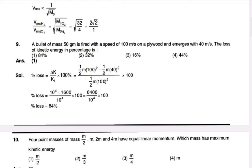Change in kinetic energy means final kinetic energy minus initial kinetic energy. Initial minus final kinetic energy is the loss. Dividing by initial kinetic energy into 100, we will get 84%.